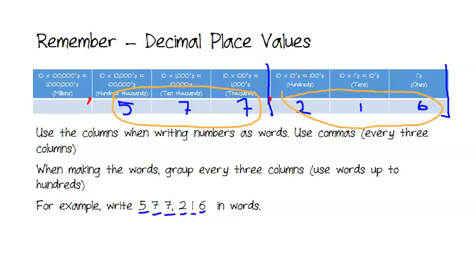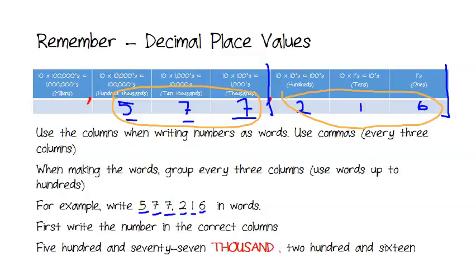So, this then just becomes 577. And this column is 1,000. So, that's going to be 577 thousand. 216 just remains as it is. So, when we write this whole thing as words, it just becomes 577 thousand, 216.